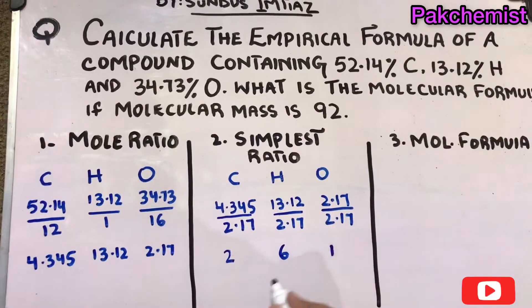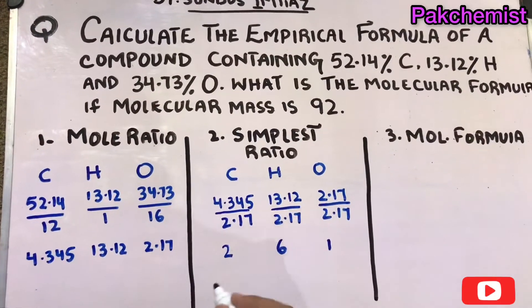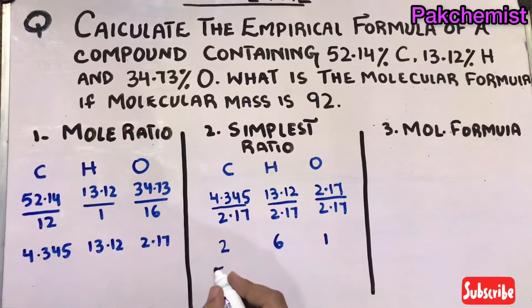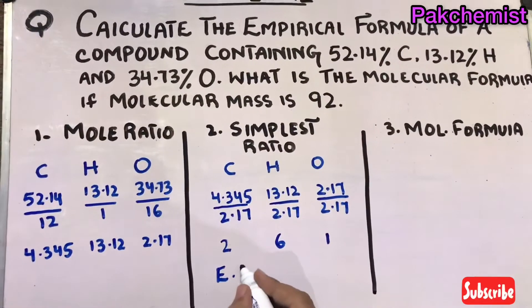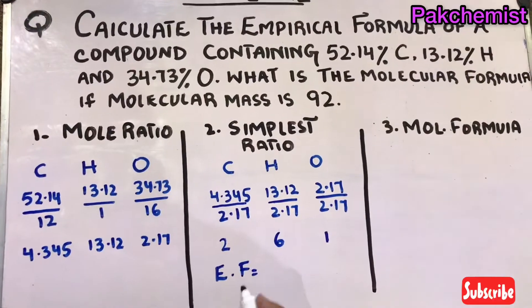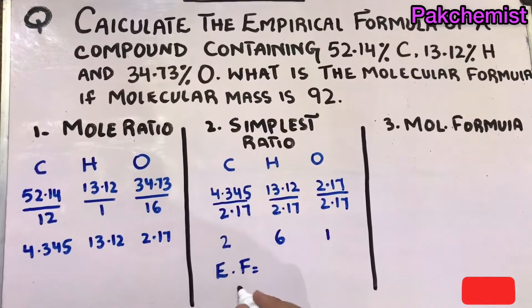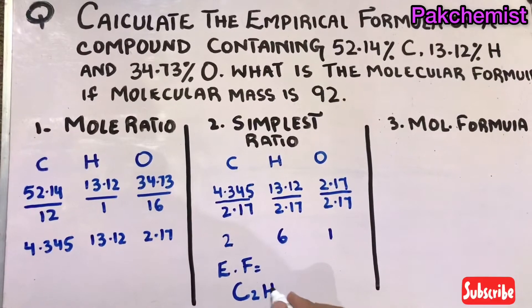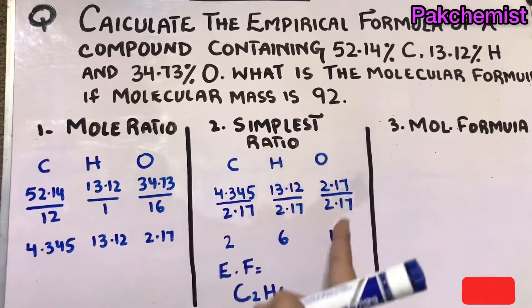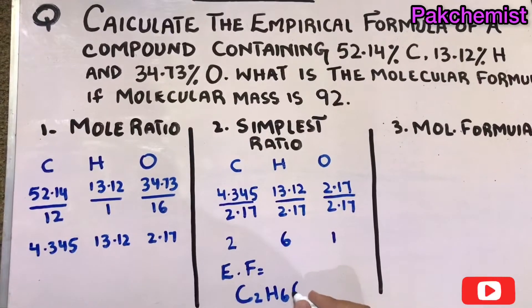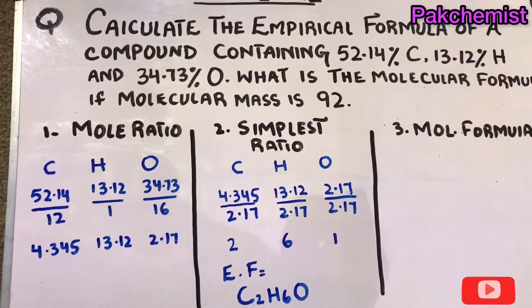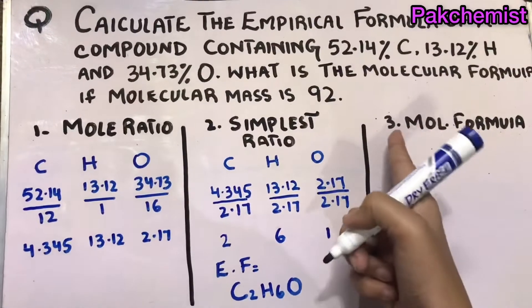After these two steps, what we get is the empirical formula is C with two atoms, hydrogen has six, and oxygen is one. Write only one oxygen; you don't have to mention one.